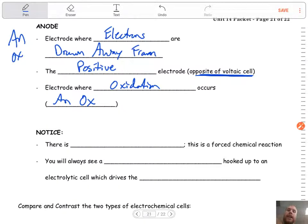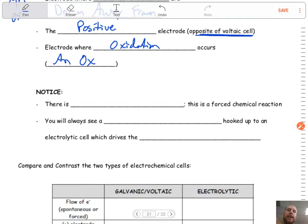So anox. So that's the biggest difference, guys, is that the electrodes have the opposite signs. And that this is a forced reaction. This is not spontaneous.